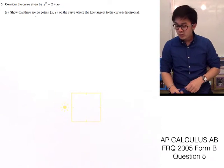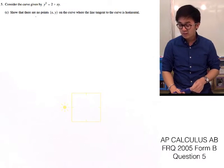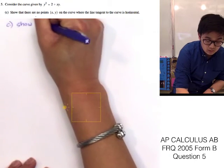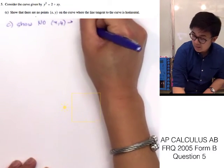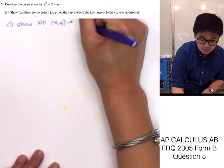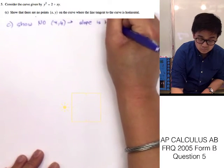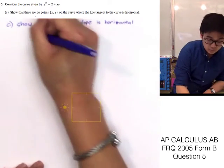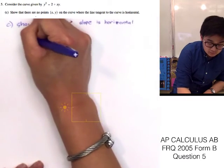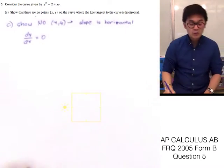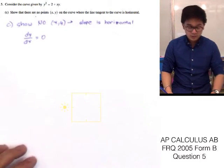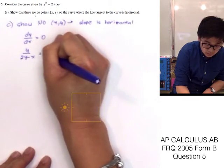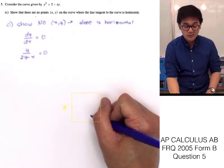For problem letter C, we need to show that there are no points (x, y) on the curve where the line tangent to the curve is horizontal. A horizontal tangent means dy/dx equals 0, so we need to show that setting dy/dx — which is y over 2y minus x — equal to 0 leads to a contradiction.